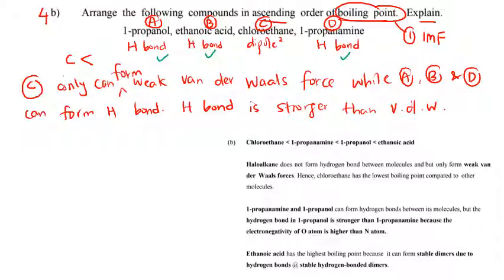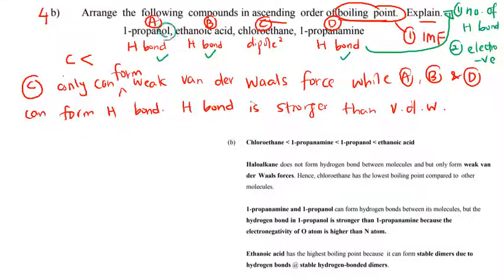Among the three compounds that form hydrogen bonds, what factors affect the strength of hydrogen bonding? First is the number of hydrogen bonds. 1-Propanol can form one hydrogen bond; ethanoic acid can form a stable dimer so it forms two hydrogen bonds; and 1-propanamine also forms one hydrogen bond.